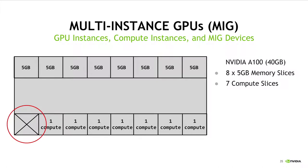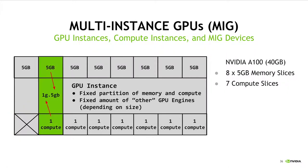Coming back to this question of why seven — ideally we would have included eight compute slices to match the eight memory slices available. However, the yields in the actual silicon make it so we can only reliably get seven compute slices instead of eight, so we are stuck with a somewhat awkward combination. To create a GPU instance, all we need to do is combine some number of compute slices with some number of memory slices and merge them together. In the case seen here, we are merging a single memory slice with a single compute slice, giving us the 1g.5gb naming convention.